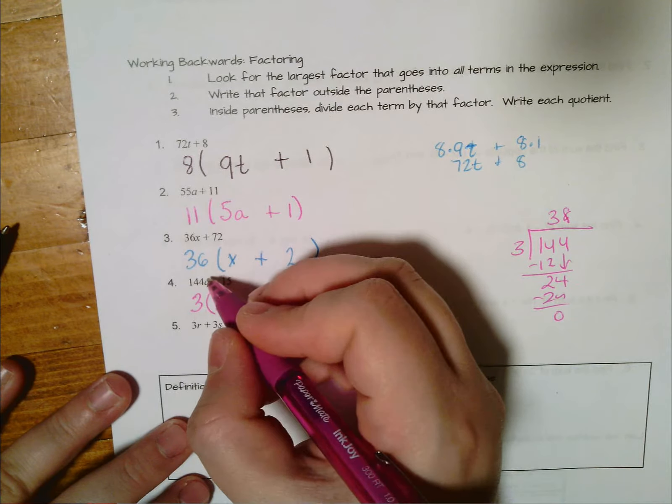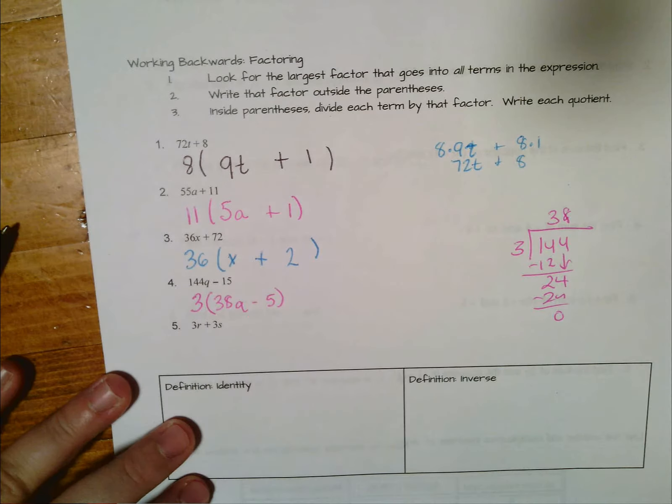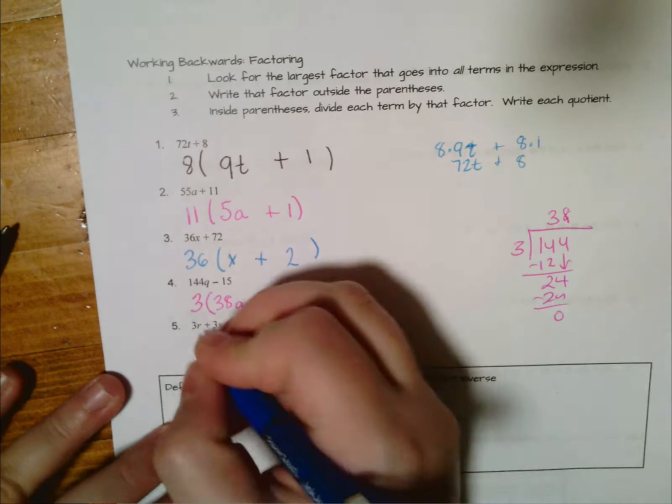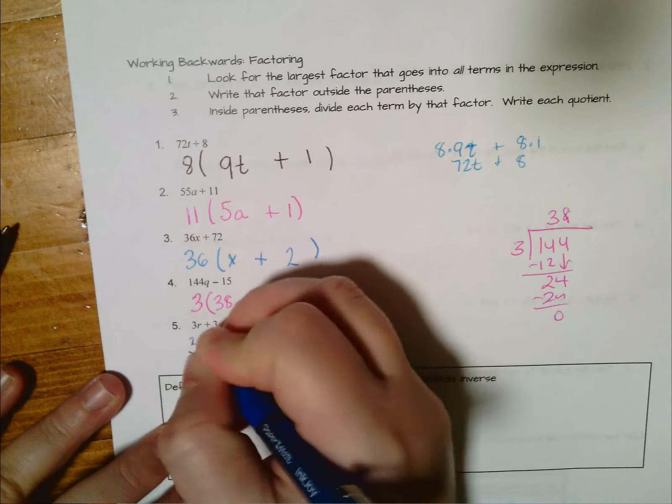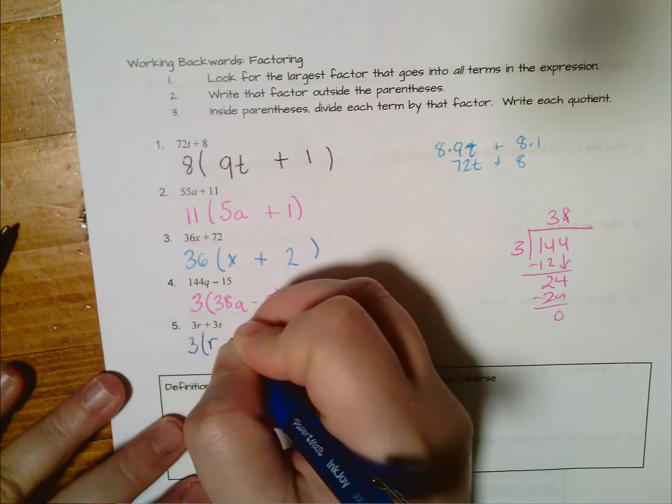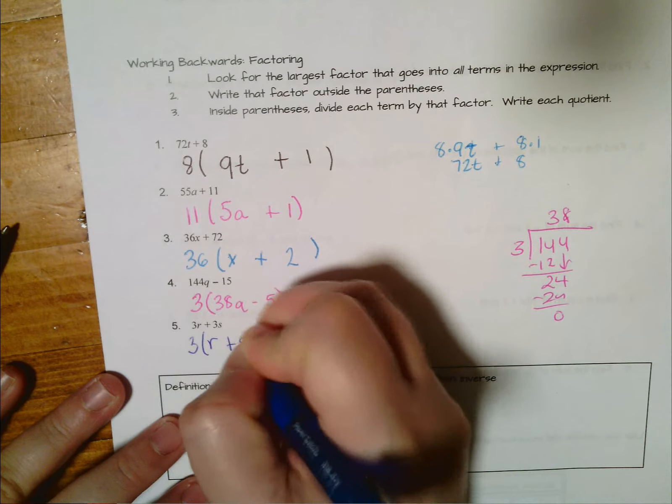Notice you were subtracting here so you continue to subtract. It works the same way when we just use variables here. The biggest factor that goes into both terms is 3, and 3 times r gives us 3r, while 3 times s gives us 3s.